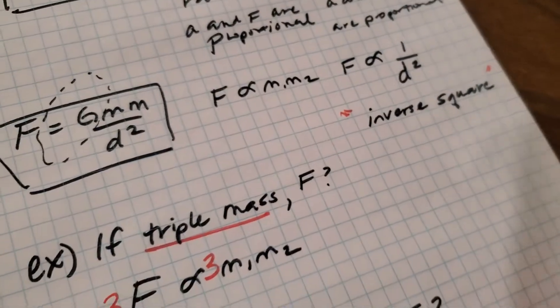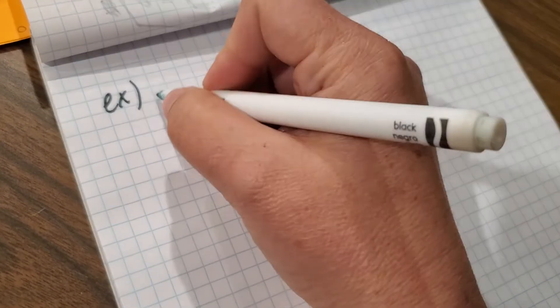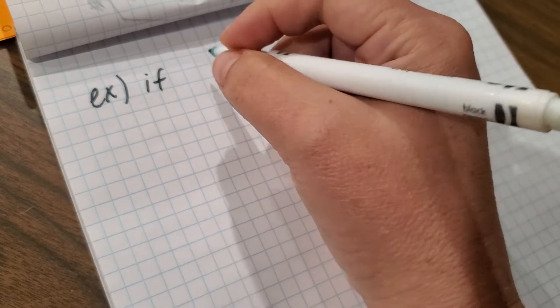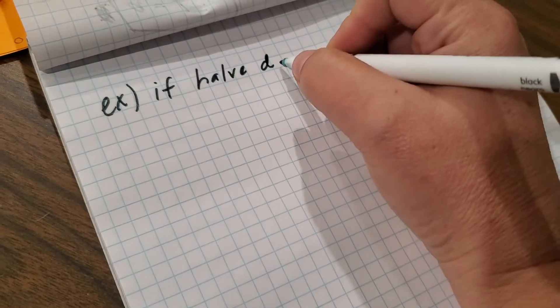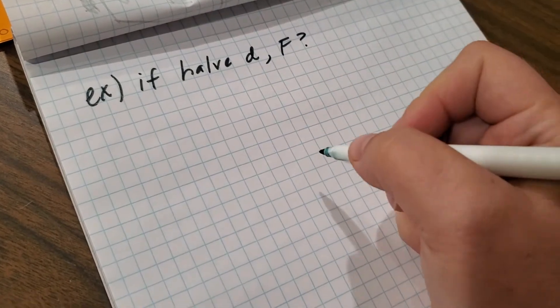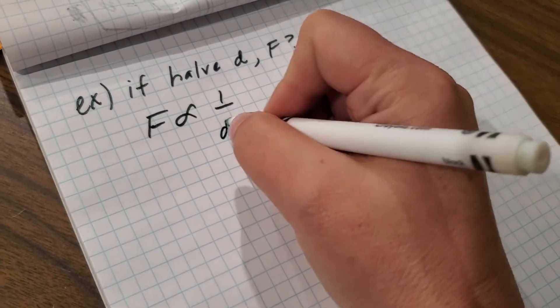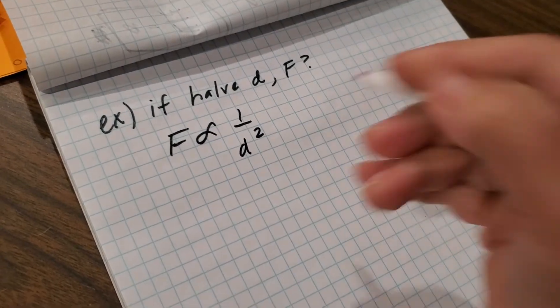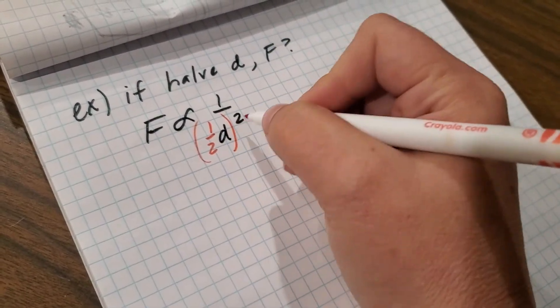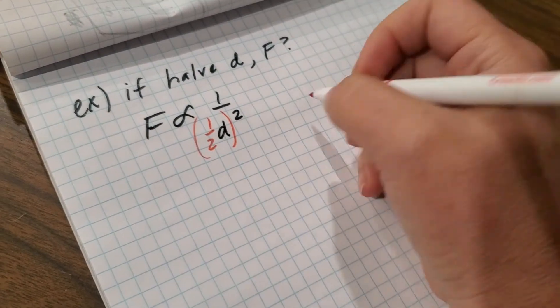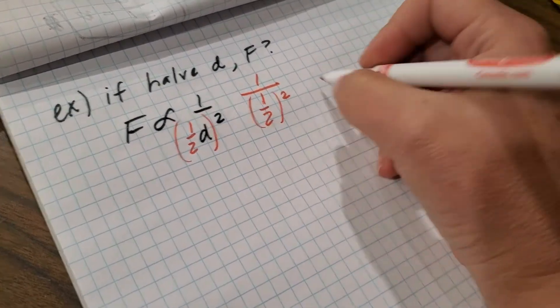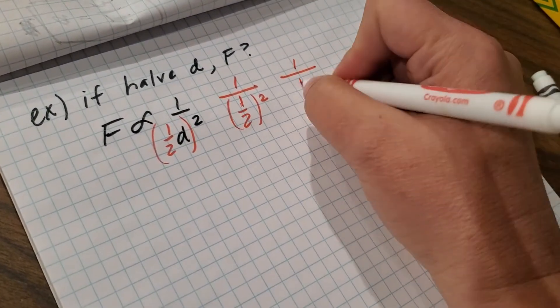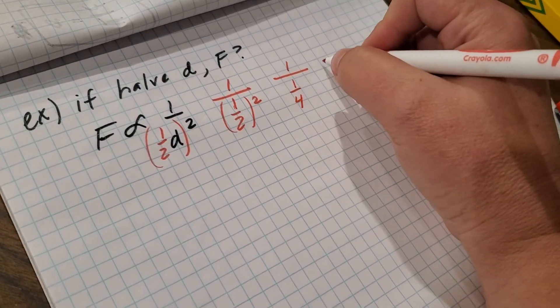All right. I'm just making these up. Let's see. If you have the distance, what happens to the force? F is proportional to one over D squared. Do what it says to do. And don't forget the parentheses. Okay. One half squared over one. That's what we're working with here. That's one over one fourth. And when you divide by a fraction, you flip it.